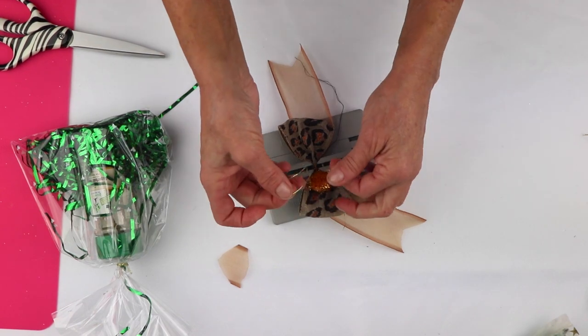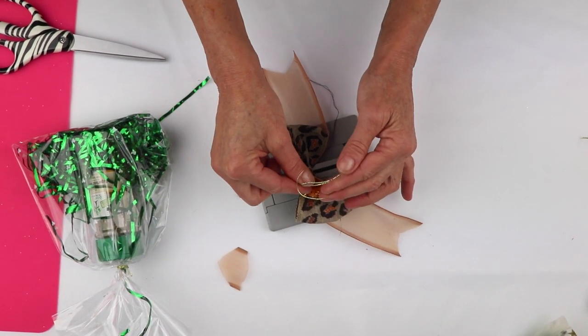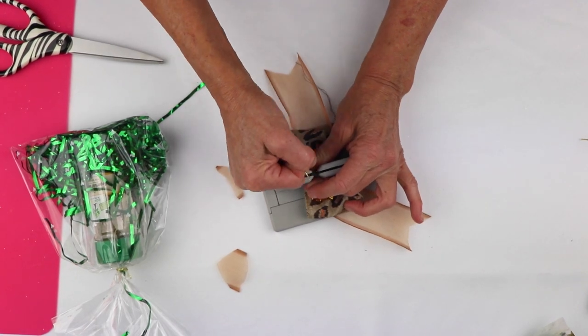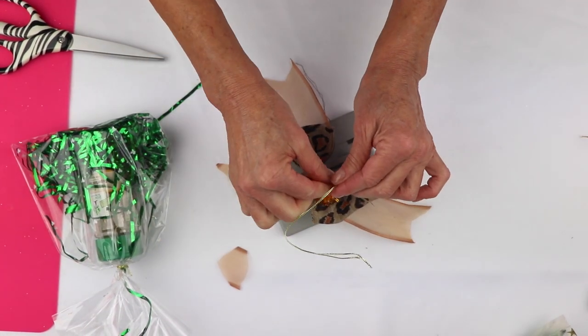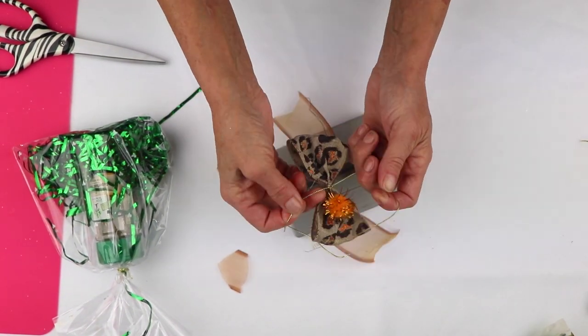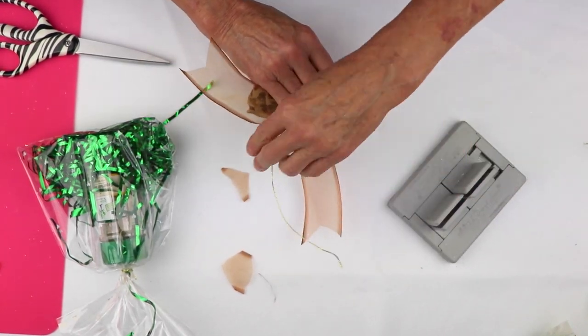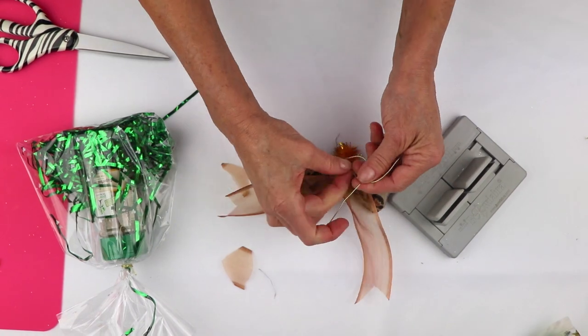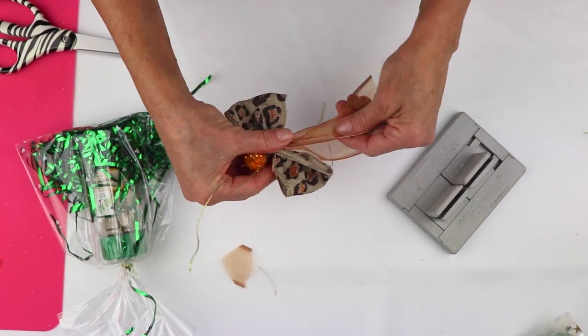Then I'm going to take my two ends, pull them through my slipknot, pull the bow tight, then pull the Bowdabra wire and bring it around to the back. And I'm just going to tie a knot to shape my bow here.